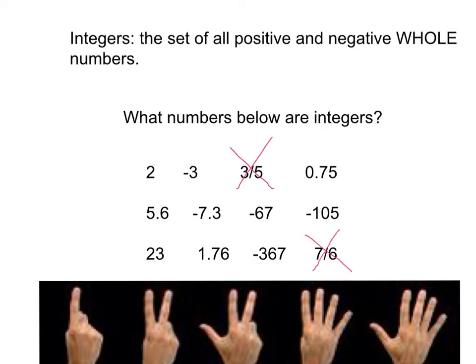0.75, or 75 hundredths, is also not a whole number, therefore it cannot be an integer. So we can also rule out 5.6, or 5 and 6 tenths; negative 7.3, or negative 7 and 3 tenths; and 1.76, or 1 and 76 hundredths.